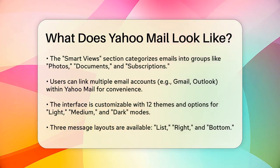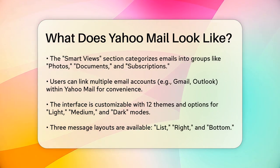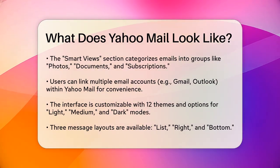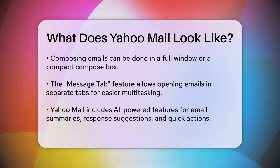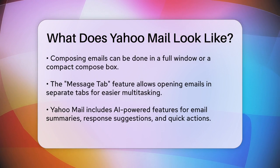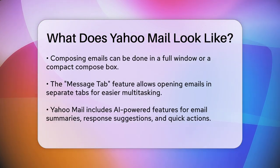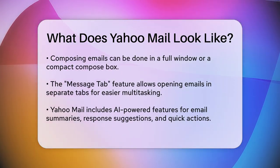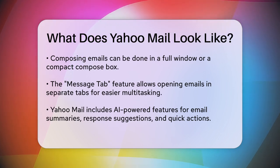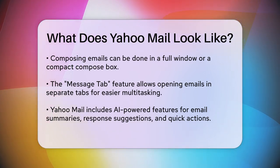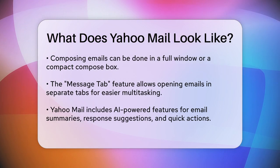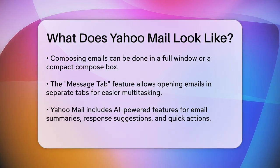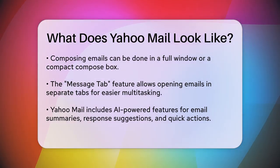The interface is highly customizable. You can choose from 12 different themes and select between light, medium, and dark modes to suit your preference. There are also three message layouts: list, right, and bottom. The right view places your inbox on the left side of the screen with the email you open appearing on the right side, similar to Microsoft Outlook. When composing emails, you have the option to use a full window or a compact compose box, similar to Gmail's setup. Additionally, you can activate the message tab feature, which opens each email in a separate tab within Yahoo Mail, making it easier to multitask and view multiple emails at once.